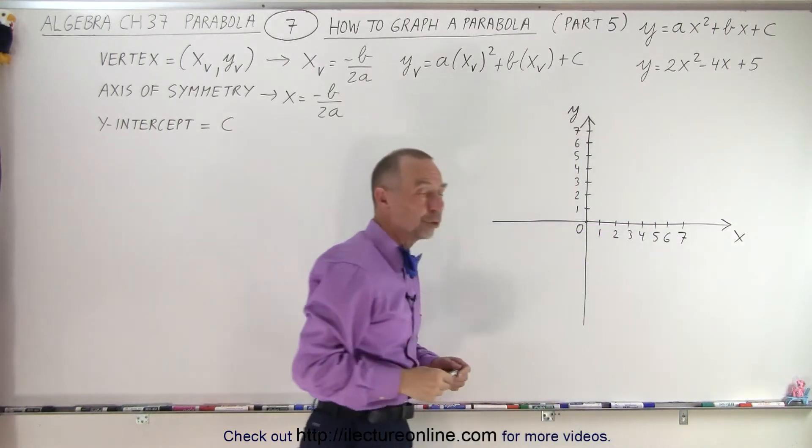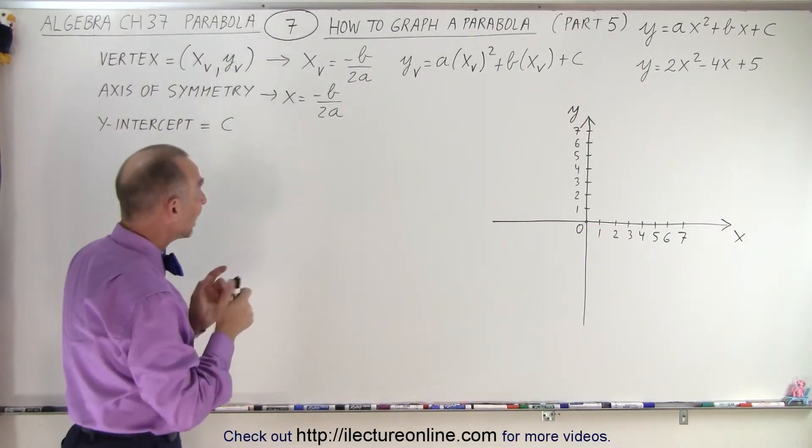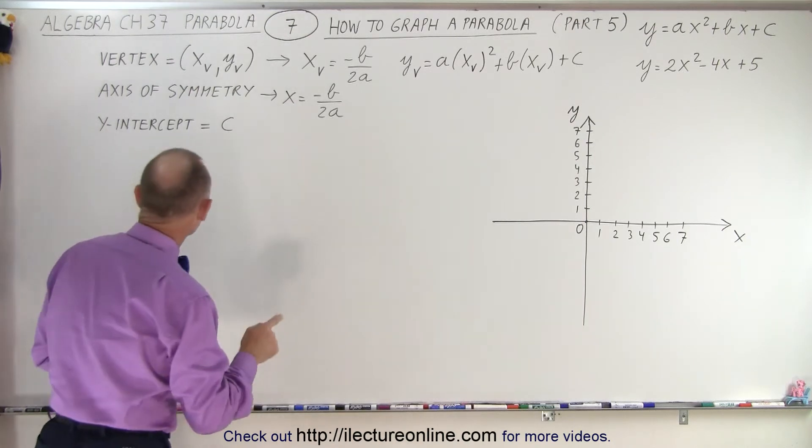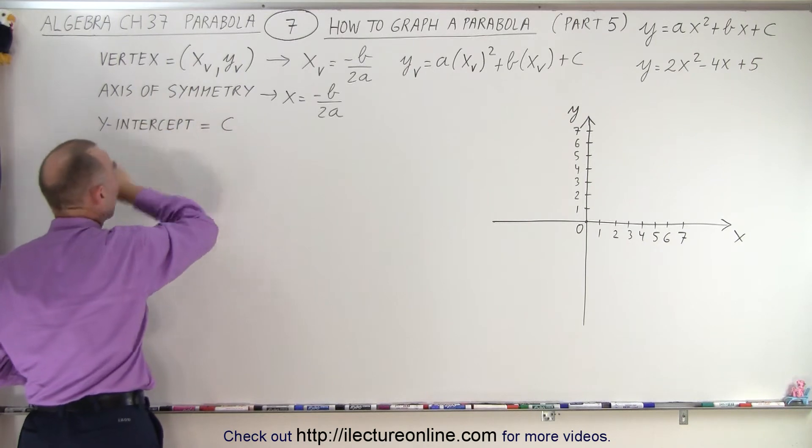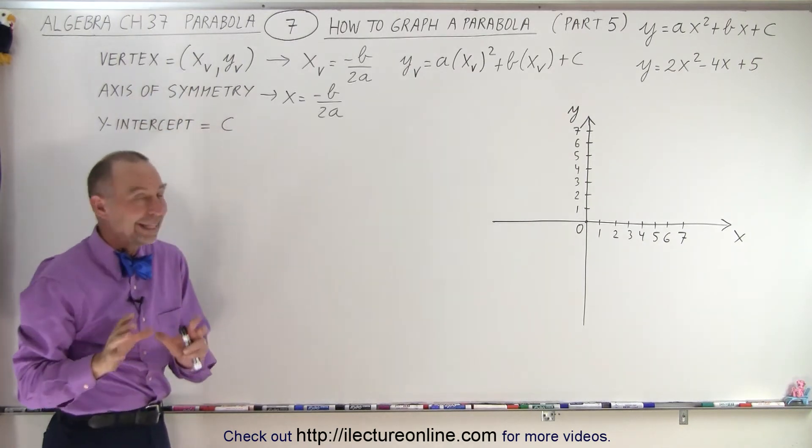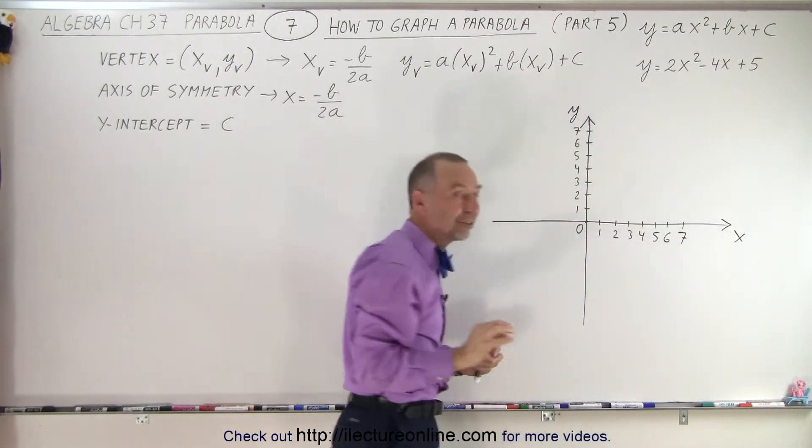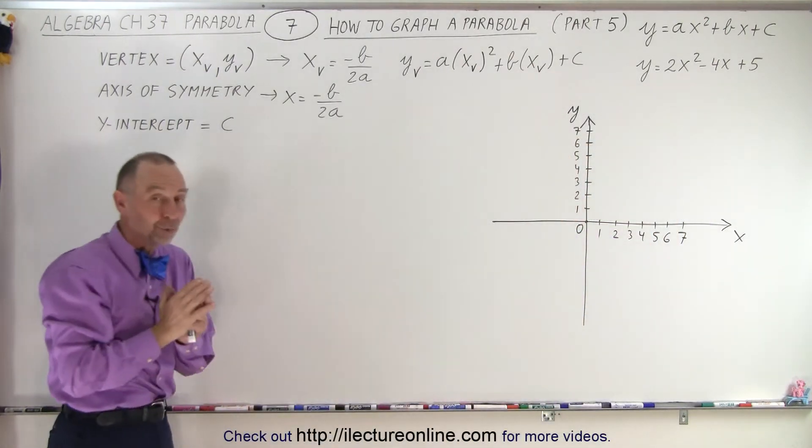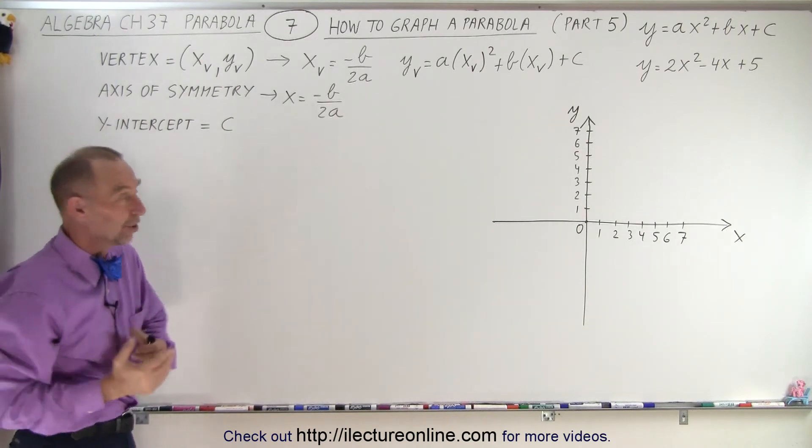This is the example we're going to use. Notice I already have an xy axis up, and what we're going to do is find the vertex, the axis of symmetry, and the y-intercept. It turns out that when the equation is written in the general format, c becomes the point where the graph will cross the y-axis. So that then becomes the y-intercept.